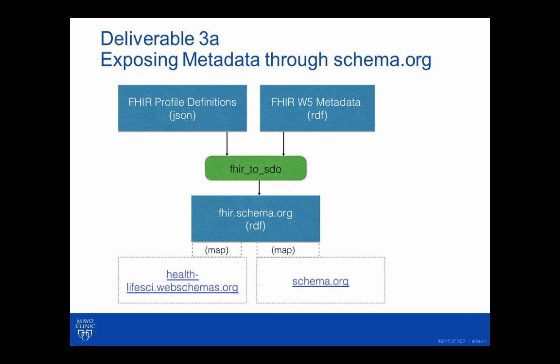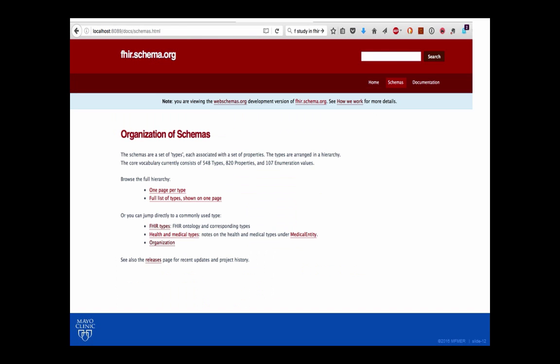We also converted FHIR — Fast Healthcare Interoperability Resources — a standard metadata model that over the past couple of years has pretty much taken over the healthcare standards community, and much of clinical data will soon be available in this FHIR model. We took a look at whether exposing the FHIR model through schema.org made sense, talked with the healthcare life sciences schema.org group, and created a map.